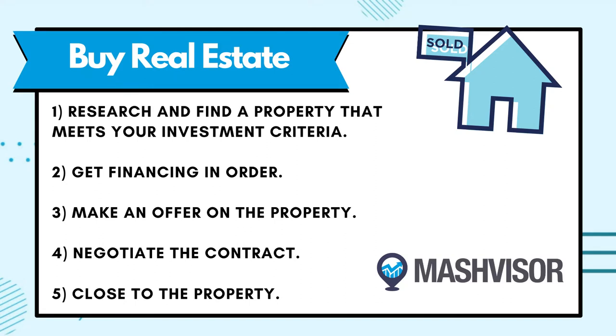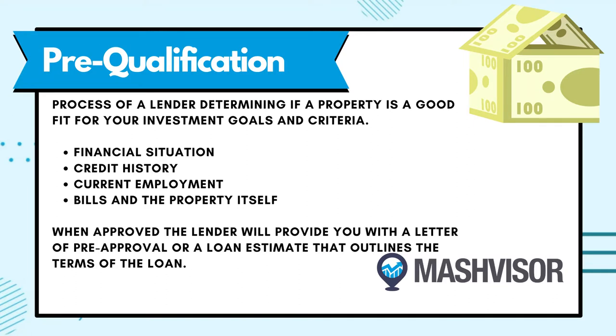The next step is to get your financing in order before you put in an offer. Once you've found a potential property, consider how you're going to pay for it. If you're using cash, it makes the transaction a lot quicker, faster, and less complex. If you are financing the property, you should get pre-qualified. Pre-qualifying is the process of a lender determining whether or not a particular property is a good fit for your investment goals and criteria. They do this by taking a close look at your financial situation, your credit history, your current employment, your bills, and the property itself. When approved, the lender will provide you with a letter of pre-approval or a loan estimate that outlines the terms of the loan. Then you use this information to make an offer on the property — if your offer is accepted, move forward with the loan process.